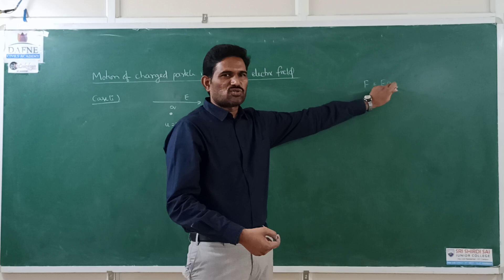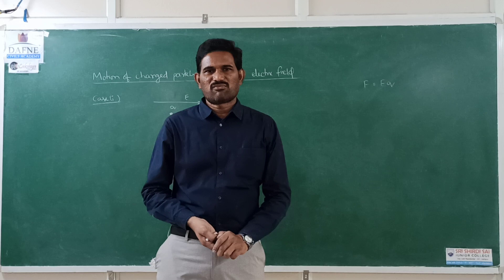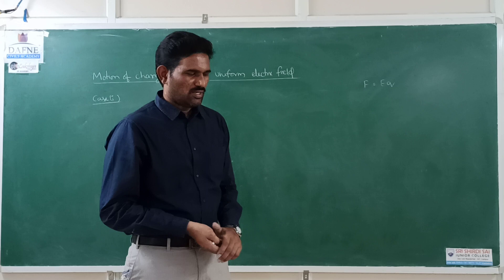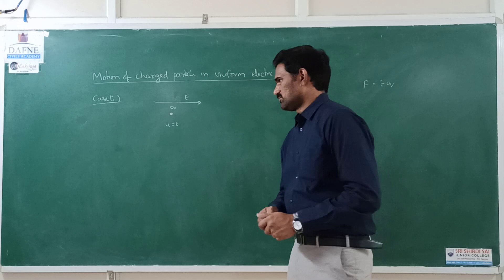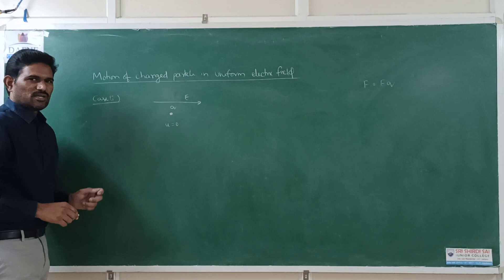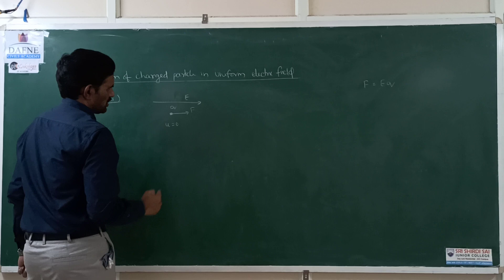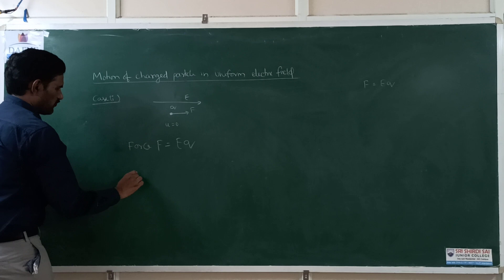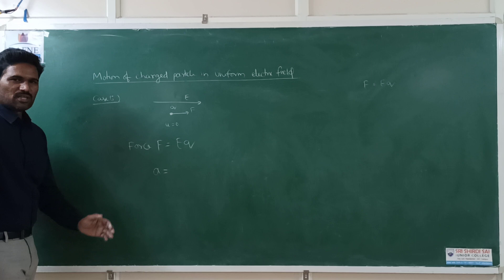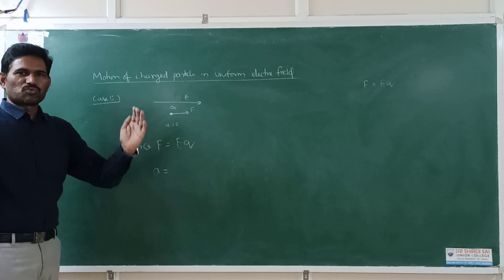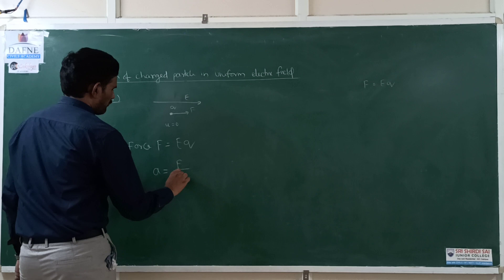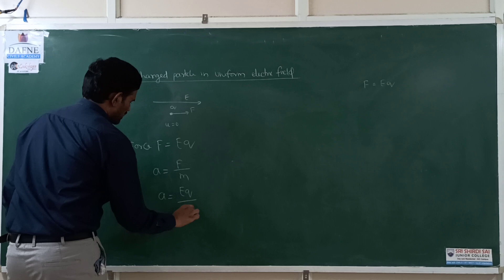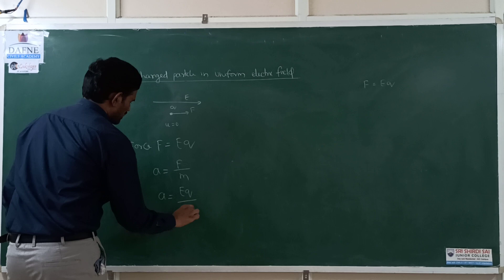If Q is a positive charge, the force will be in the direction of the electric field. If Q is negative, the force will be opposite to the direction of the electric field. Taking the general case with a positive charge, the force acting on the particle is F = EQ. The acceleration of the particle is F/m, which equals EQ/m. This acceleration is constant because the electric field is constant.